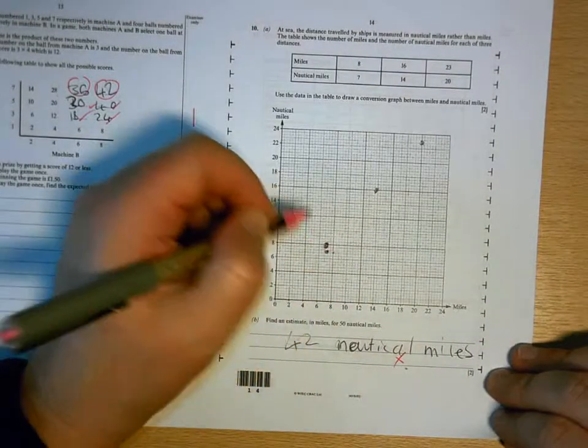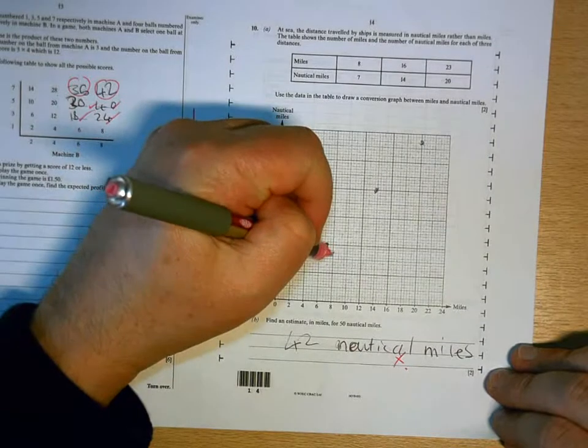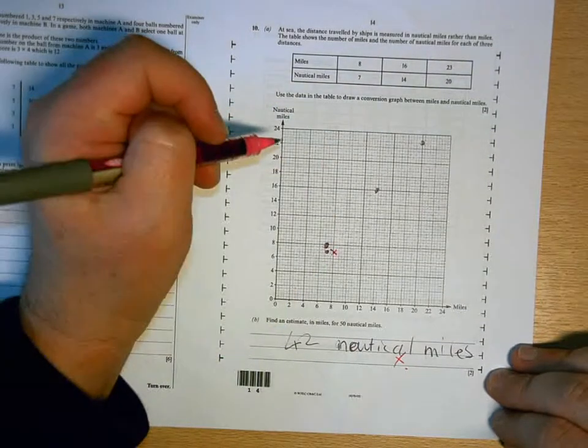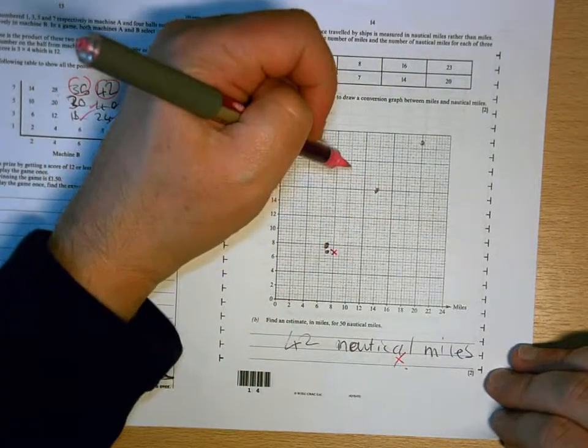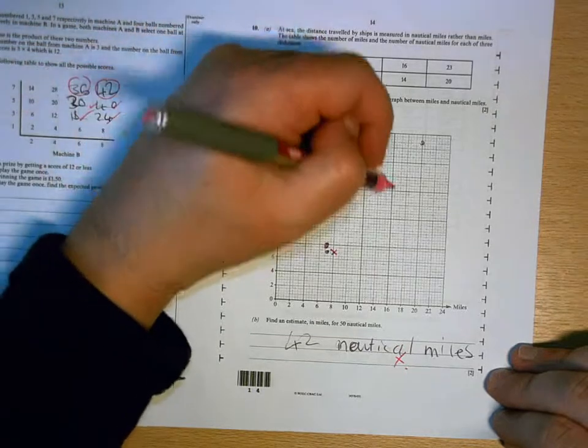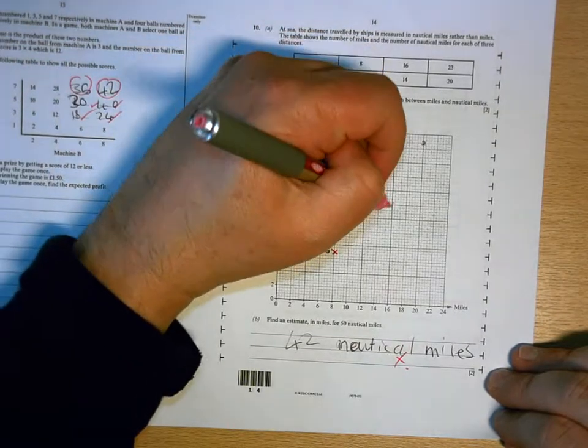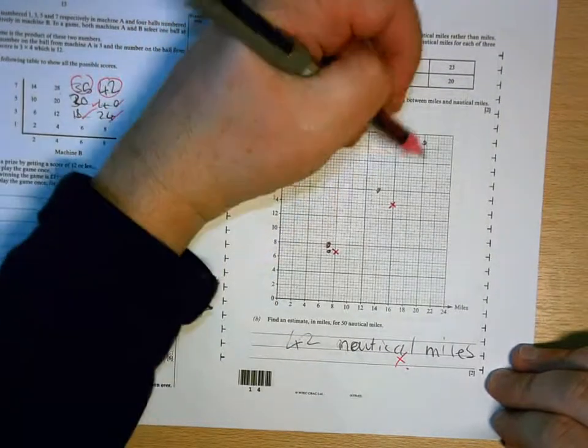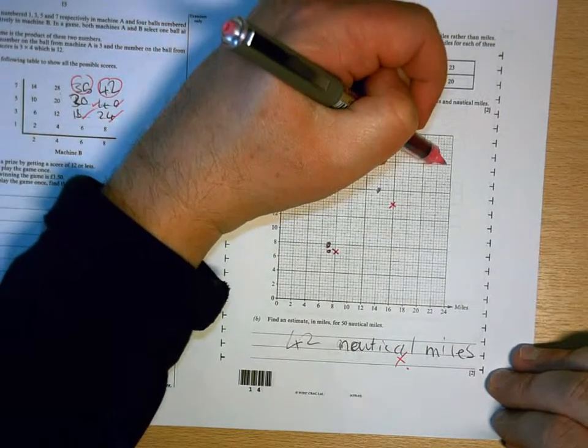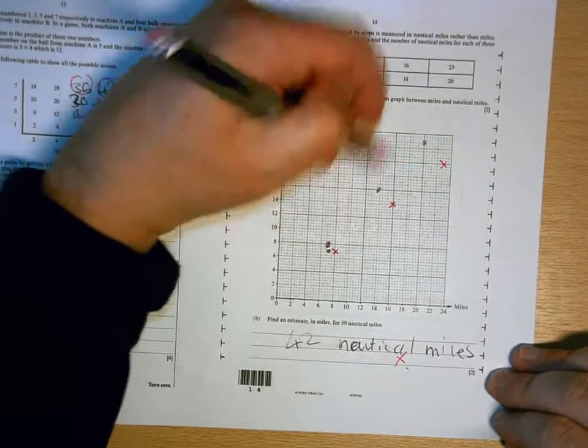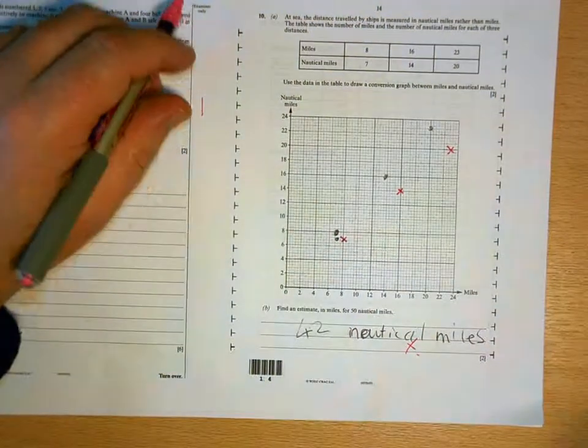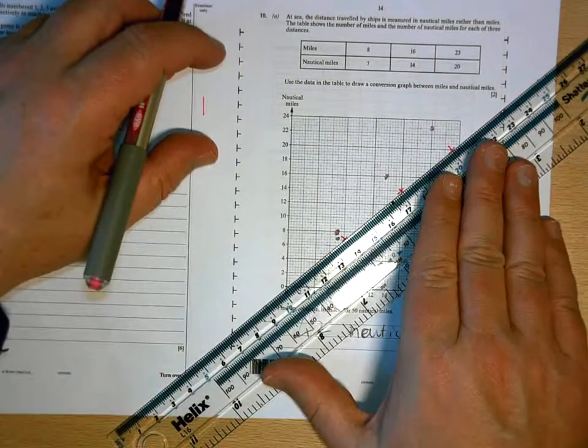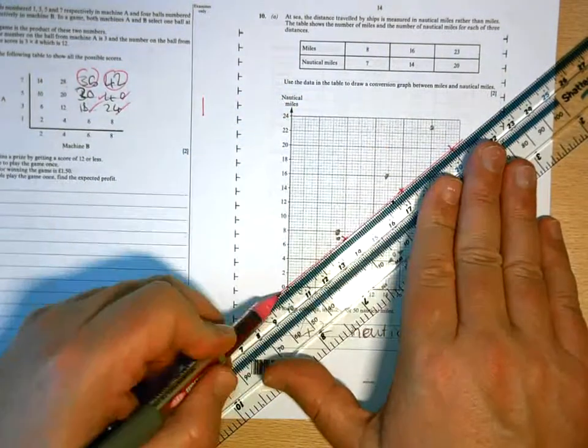Across 8, up 7 is there. Across 16, up 14 is there. So, the first miles is the across number. Across 23, up 20 is there. So, all of your points are in the wrong place. And once you've got your points, you then need to join them with a ruler through 0.